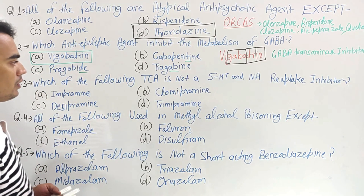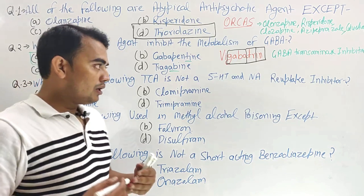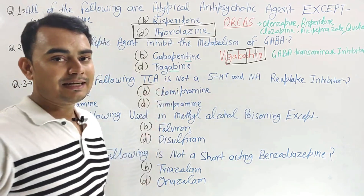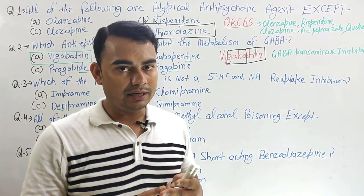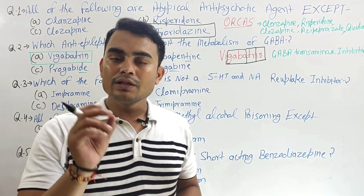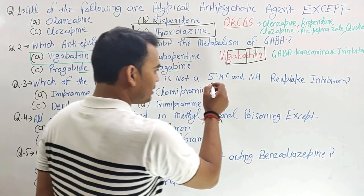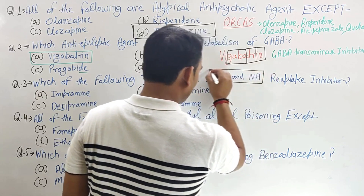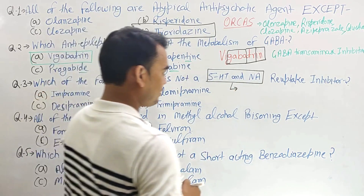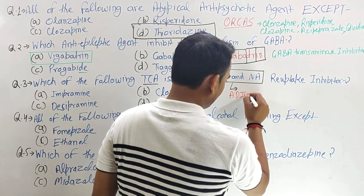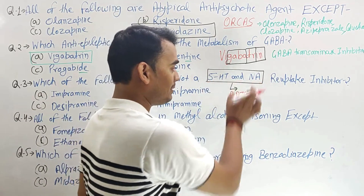Third question: which of the following TCAs is not a 5-HT and noradrenaline reuptake inhibitor? Under TCAs — tricyclic antidepressants — we have two major classes: first, which inhibits both 5-HT and noradrenaline; and second, which predominantly inhibits noradrenaline reuptake. To remember the drugs that inhibit both 5-HT and noradrenaline, just remember the word ADDICT.